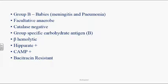It is bacitracin resistant. When compared to Group A Streptococci (Streptococcus pyogenes), Group B Streptococci are resistant to bacitracin. In bacitracin-containing media, Group B Streptococci will grow comfortably, whereas Group A Streptococci are sensitive and will not grow.